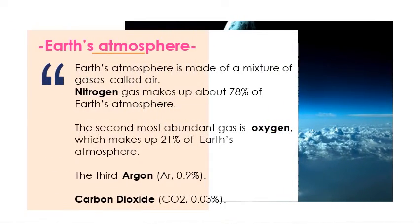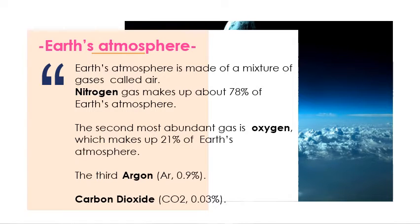Our Earth's atmosphere by definition is made up of a mixture of gases called air. It is composed of nitrogen, which makes up about 78% of the Earth's atmosphere. The second most abundant gas is oxygen, which makes up 21%. The third is argon, making up 0.9%, and carbon dioxide making up 0.03% of the Earth's atmosphere.